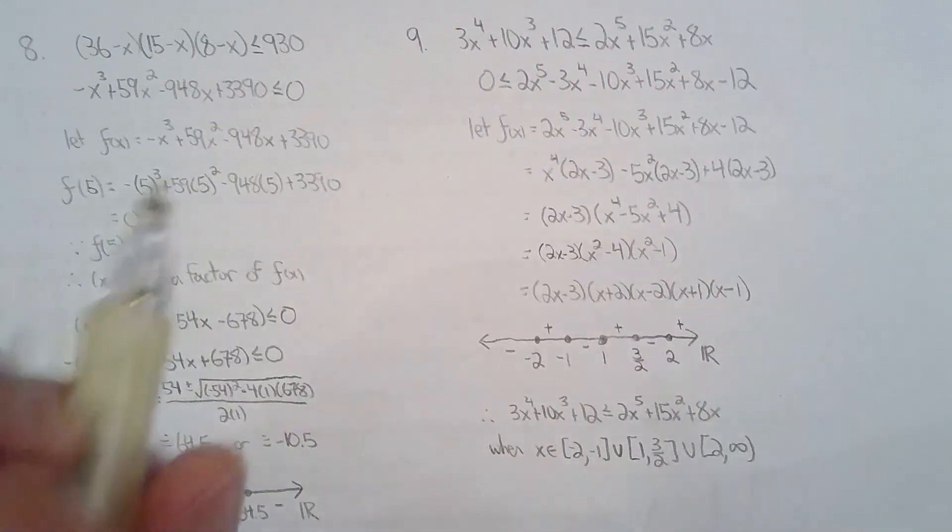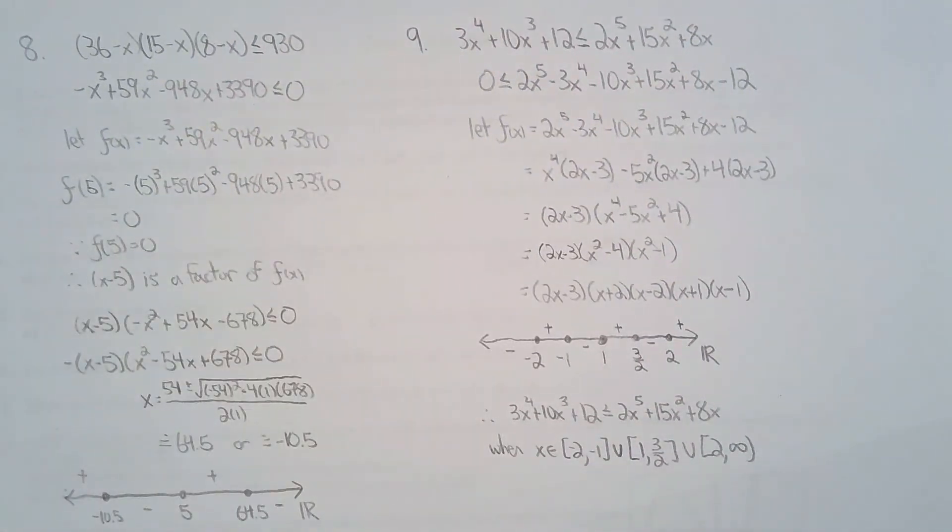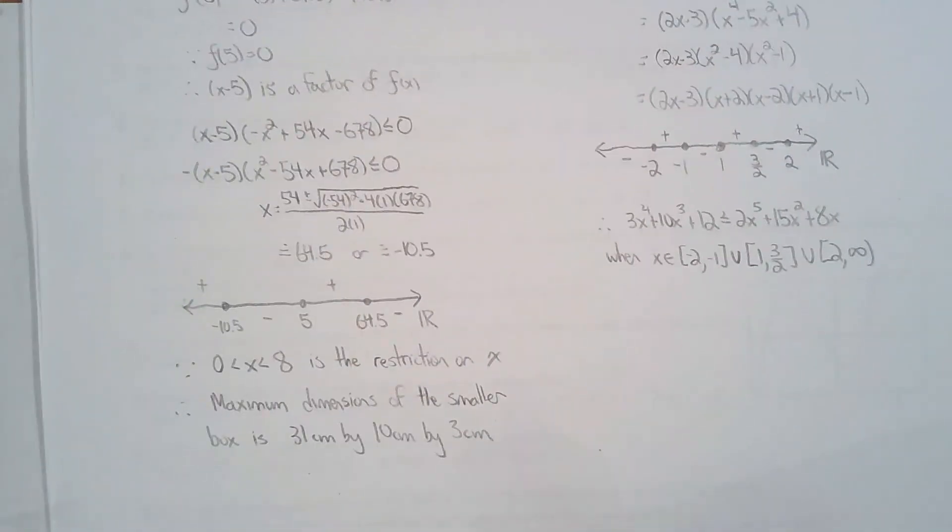Alright. So question 9. Actually, sorry, before I move on to question 9, I just want to state something here. This restriction is important because what this is saying is you can decrease the dimension of each box by like 64.5 centimeters. And 65 and 66 and so forth and so on. But it doesn't make any sense because you can't decrease it by that much for the reasons I mentioned before. Alright. Sorry. Back to number 9.